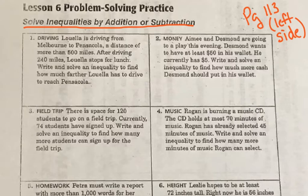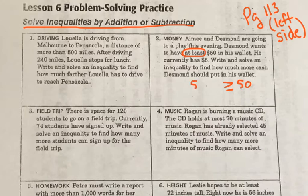Let's go to number two. Amy and Desmond are going to a play this evening. Desmond wants to have at least $50 in his wallet. When you see the word 'at least' when we're working with inequalities, we are going to write this as: at least $50, meaning whatever's on the left side, we want it to be greater than or equal to $50. He currently has $5.